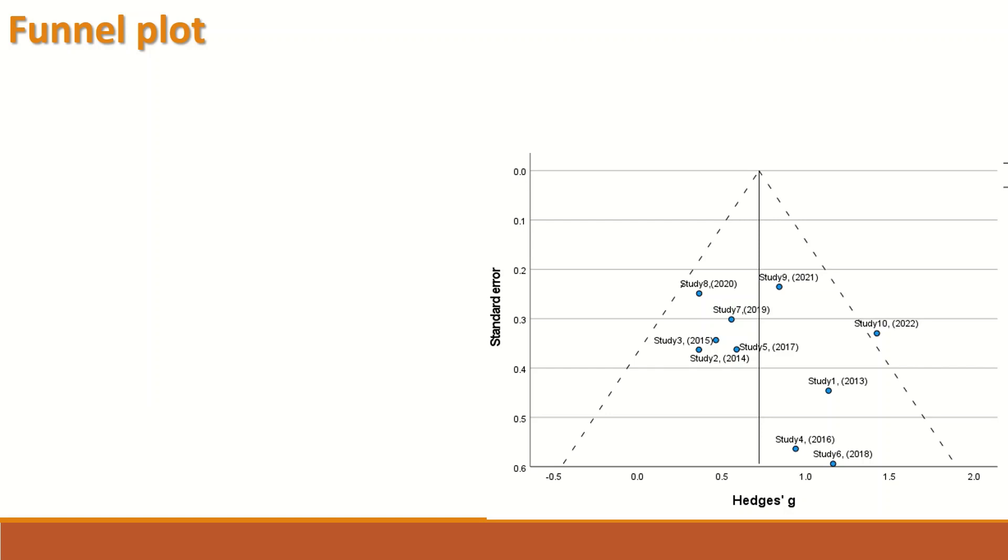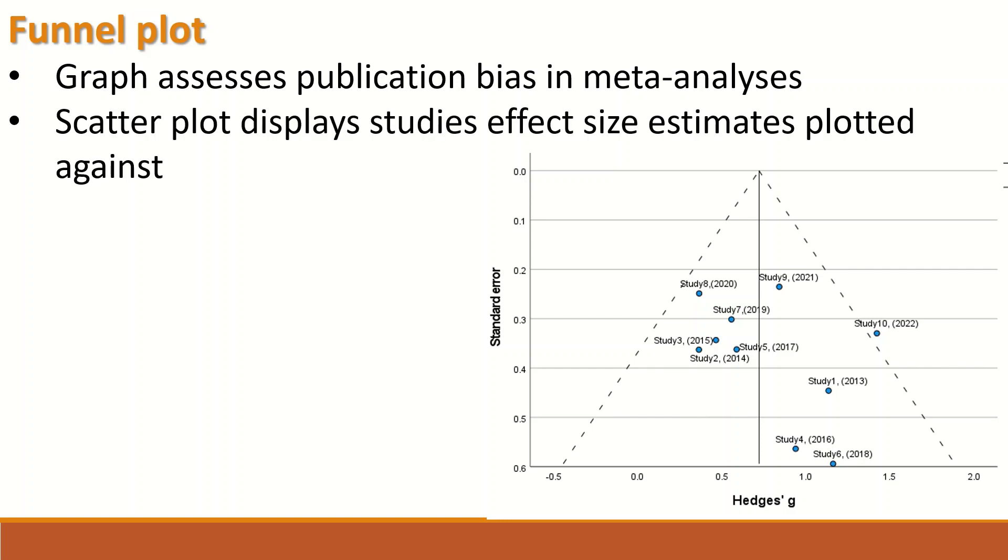So this is the shape of the funnel plot that can be produced post meta-analysis. As shown here, it is a scatter plot with an x-axis that has on it the effect size or sizes and on the y-axis is the precision or the standard error. This graph is in the shape of an inverted funnel and it will allow visual inspection of the distribution of these small dots here under the funnel.